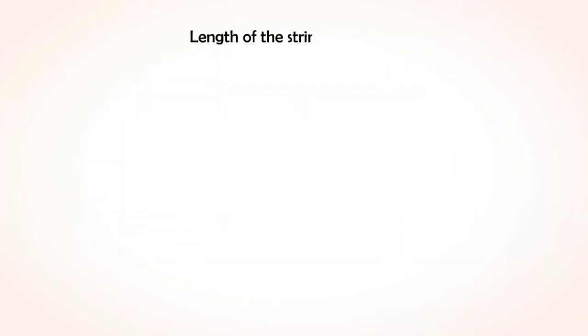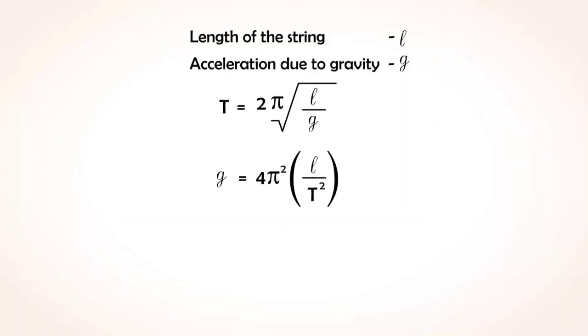Time period of oscillation depends on the length of the string L and acceleration due to gravity G. T is equal to 2π into square root of L by G. The acceleration due to gravity can be calculated from the equation G is equal to 4π² into L by T².